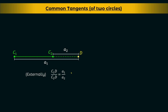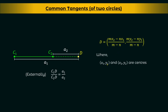In this case, you can use the section formula for dividing externally, that is: (m·x2 − n·x1) / (m − n) and (m·y2 − n·y1) / (m − n). Here x1, y1 and x2, y2 are the centers of the circles — C1 is (x1, y1) and C2 is (x2, y2). And m : n is nothing but A1 : A2, the ratio with which the point D divides C1C2.